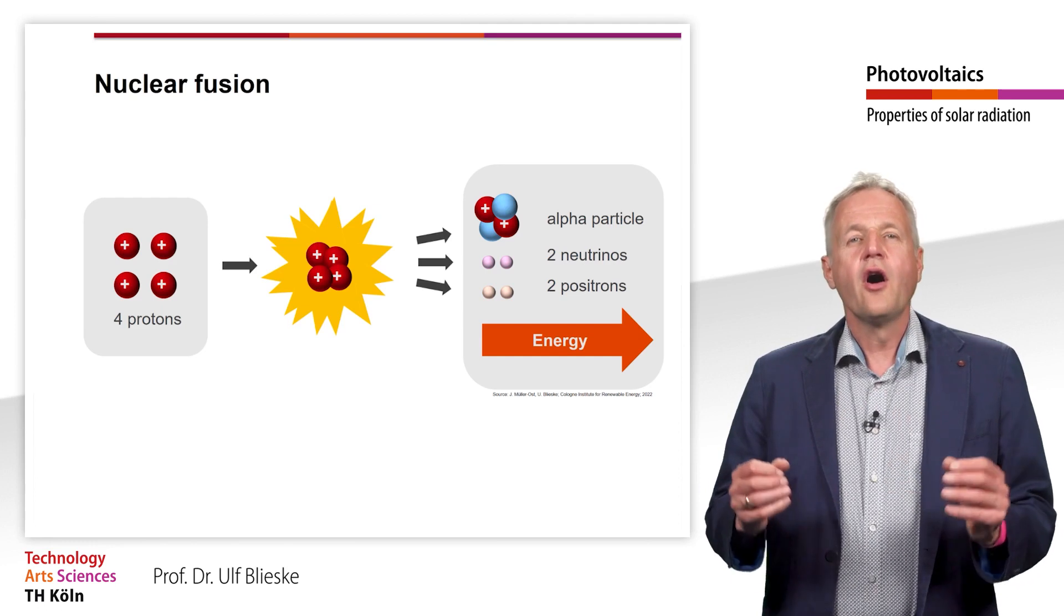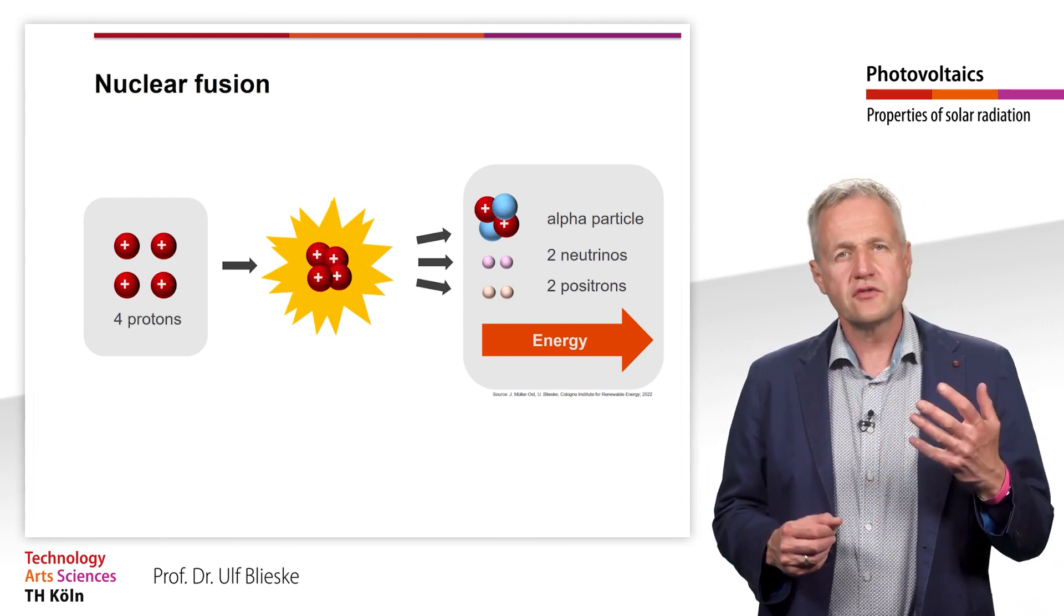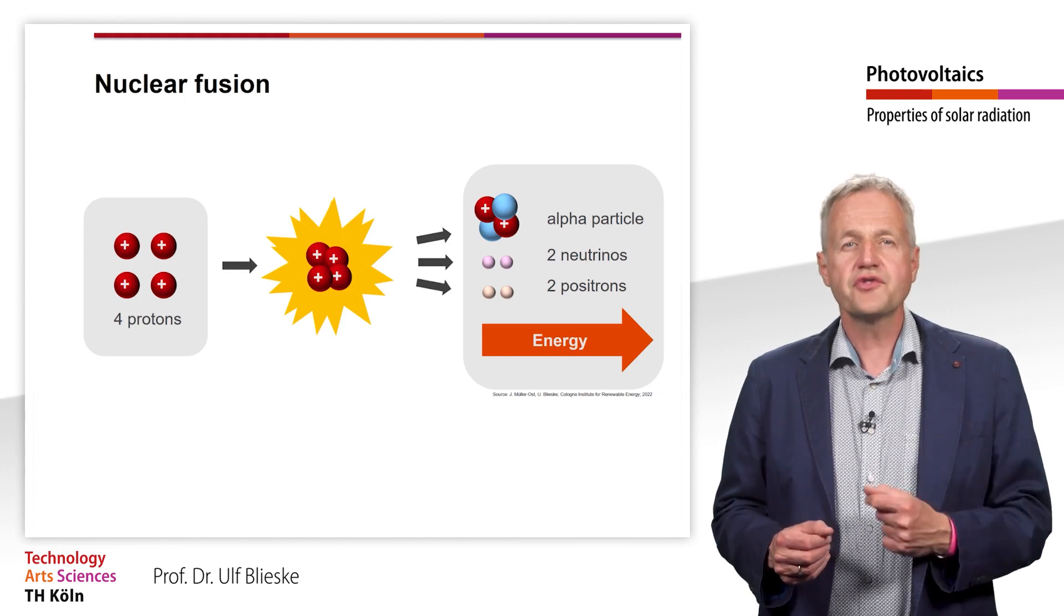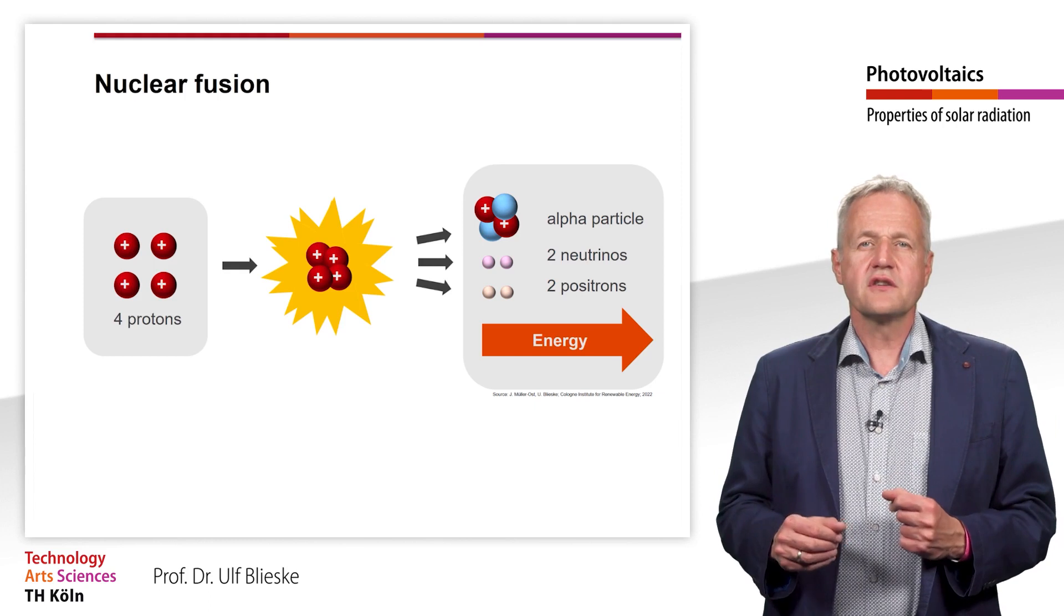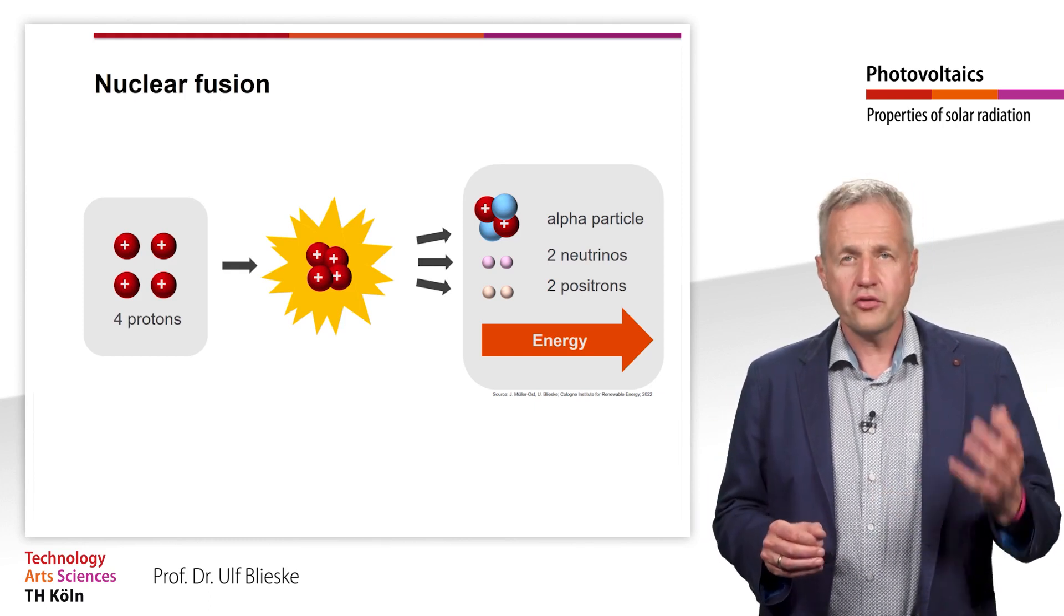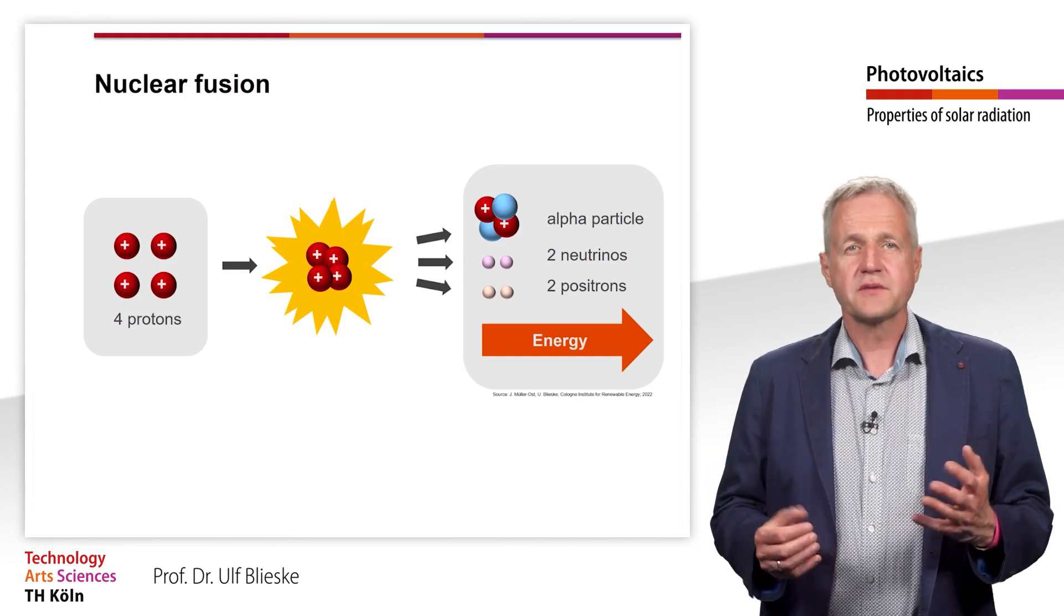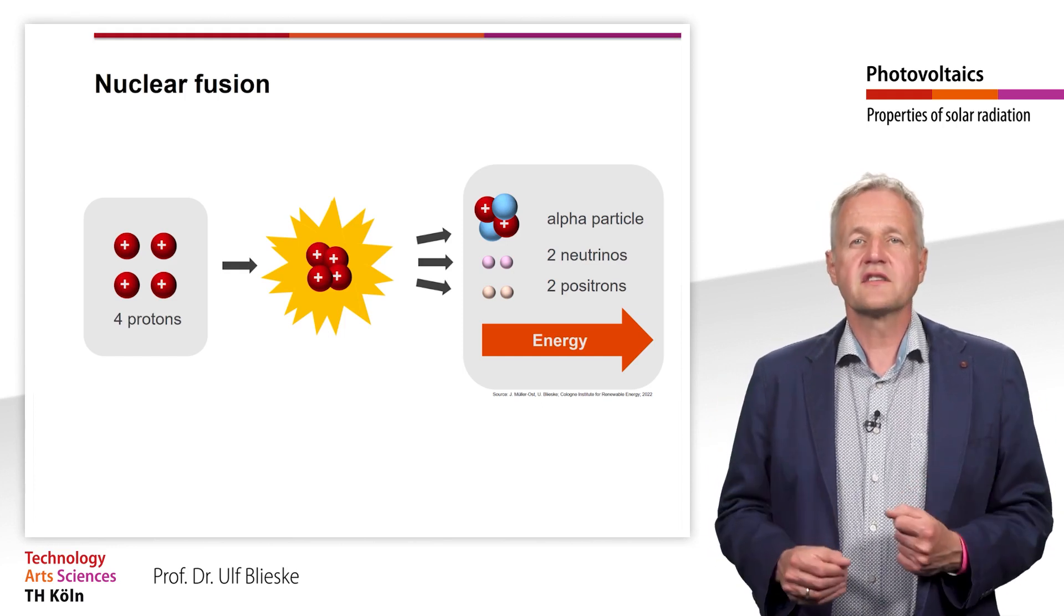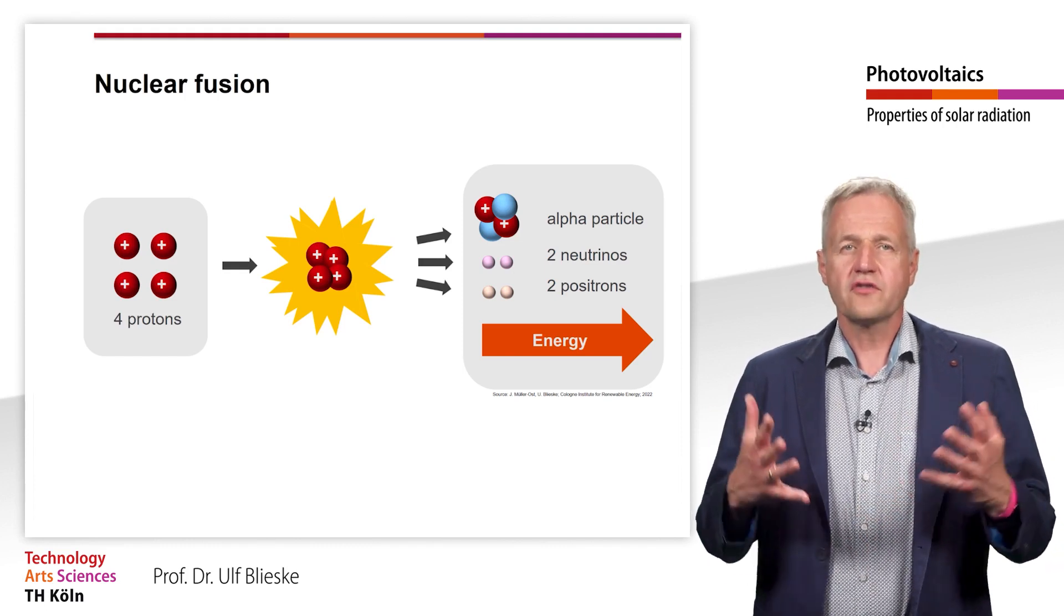Inside the Sun, four protons fuse to form an alpha particle, two positrons, two neutrinos and energy. These particles together have a lower mass than four protons. The difference is called the mass defect. This mass defect is converted into energy, which is the source for solar radiation.